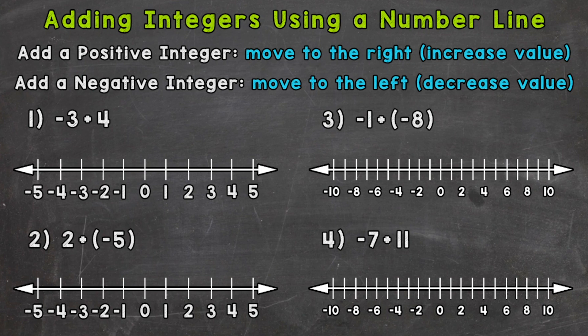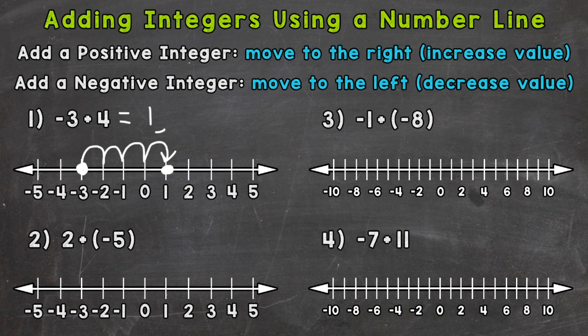Let's jump into number one, where we have negative three plus four. We're starting at negative three, and we are adding a positive four, so we are increasing in value — we are going to move to the right. Starting at negative three, we move four spots to the right: one, two, three, and four. We end up on positive one. So the answer to negative three plus four is positive one.